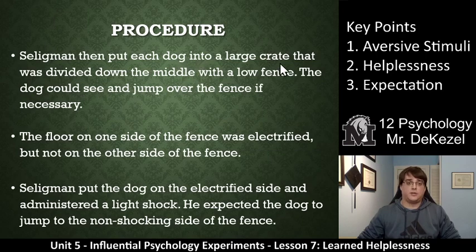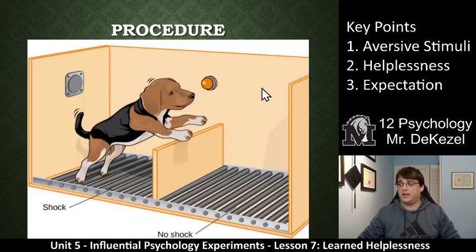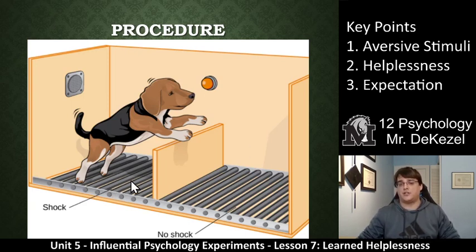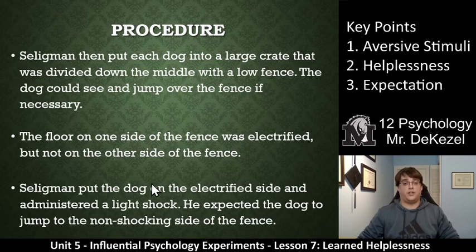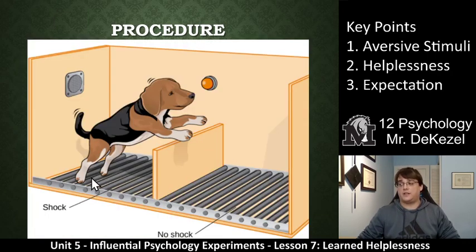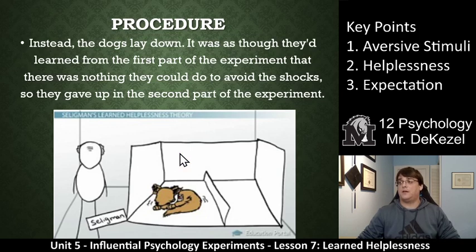Seligman then put each dog into a crate divided down the middle with a low fence — the dog could see and jump over the fence if necessary. The floor on one side was electrified, but not on the other side. Seligman put the dog on the electrified side and administered a light shock. He expected the dog to jump over to the non-shocking side — that would make sense, get away from the shock. The dogs, however, had already learned that there was nothing they could do to get away from the shock.